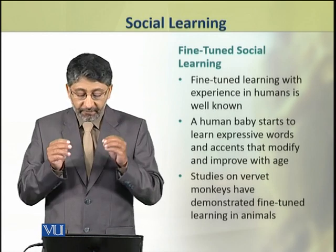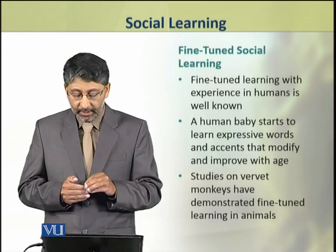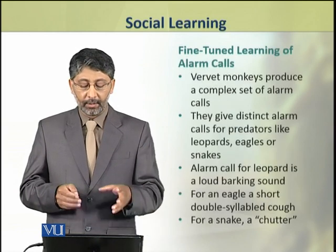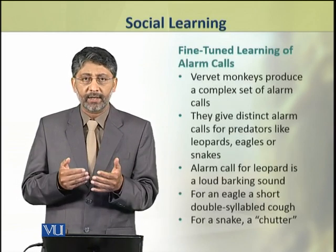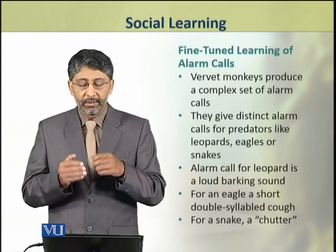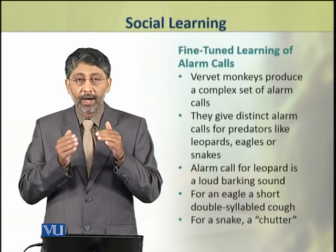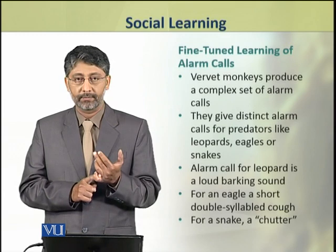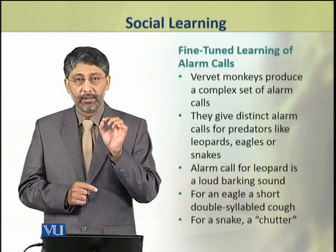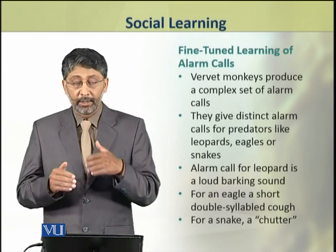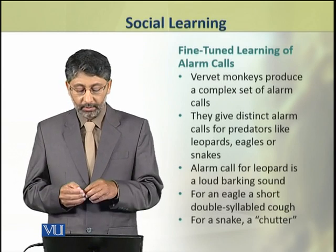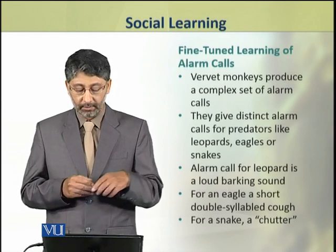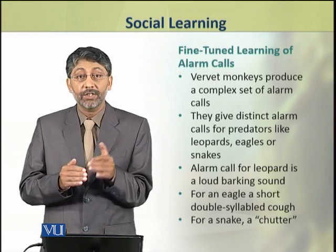Studies on vervet monkeys have demonstrated fine-tuned learning in other animals. Vervet monkeys produce a complex set of alarm calls. They give distinct alarm calls for predators like leopards, eagles, or snakes. The alarm call for a leopard is a loud barking sound. For an eagle, a short double-syllable cough is produced, while for a snake, a chatter sound is produced.